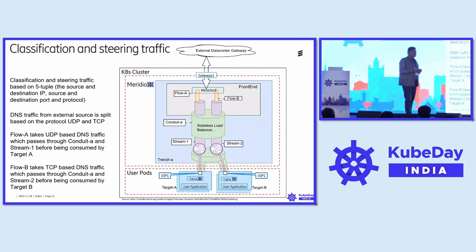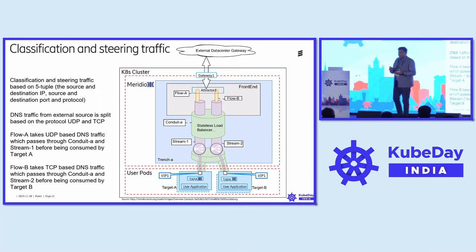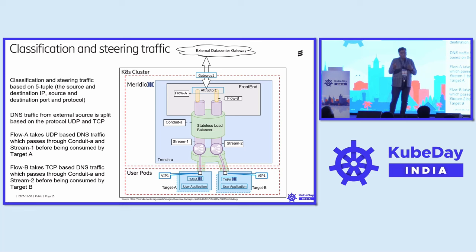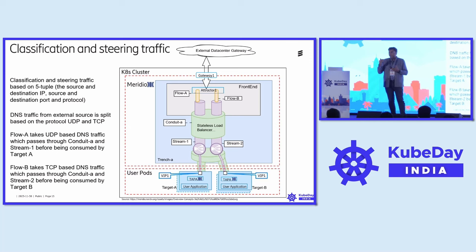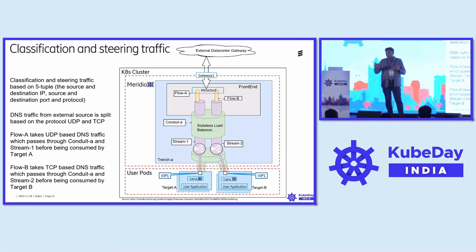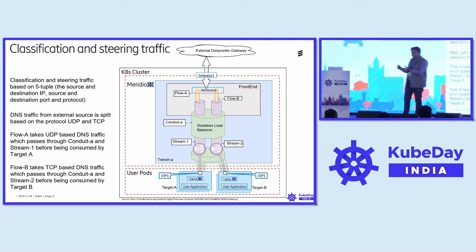Classification and steering of traffic is another important use case where Meridio can be very useful. Suppose you have a requirement to handle DNS traffic — DNS UDP and TCP traffic separately. Flow A takes care of the UDP part of the DNS, while Flow B takes care of the TCP part. Flow A takes UDP-based DNS traffic, which passes through the conduit via Stream 1 into Target A application, while Flow B takes care of the TCP traffic.